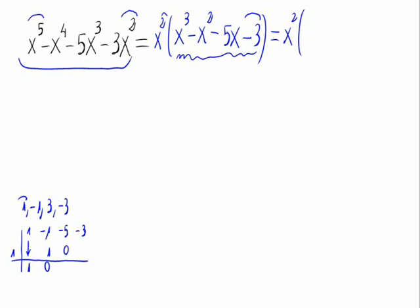1 times 1 is 1, minus 1 plus 1 is 0, 0 times 1 is 0, minus 5 plus 0 is minus 5, minus 5 times 1 is minus 5, and minus 3 plus minus 5 is minus 8. The last number wasn't 0, so we don't factorize with 1.